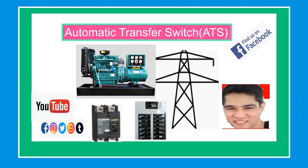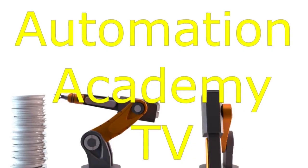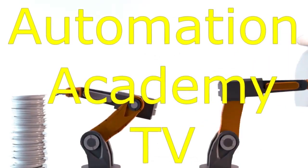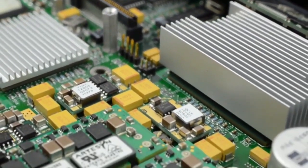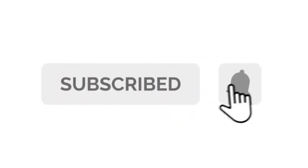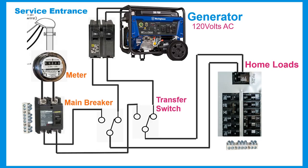Our topic for today is automatic transfer switch. A transfer switch is an electrical switch that switches a load between two sources. Some transfer switches are manual, in that case you will be the one to transfer by throwing a switch, while others are automatic and switch on or off when they sense one of the sources has lost or gained power.